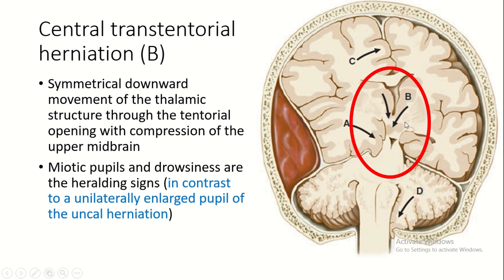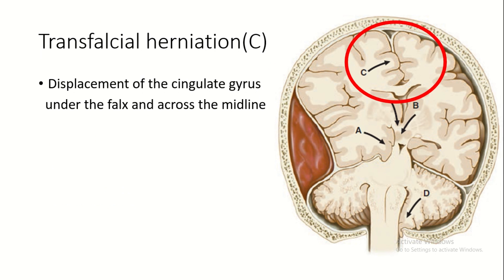Patients with central herniation usually present with miotic pupils and drowsiness, and these are the heralding signs. These signs help us differentiate central herniation from uncal herniation, because in uncal herniation there is a unilateral enlarged pupil, whereas miotic pupils and drowsiness are the important features in central transtentorial herniation.